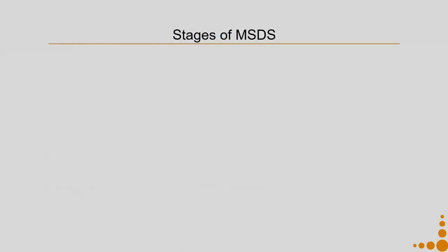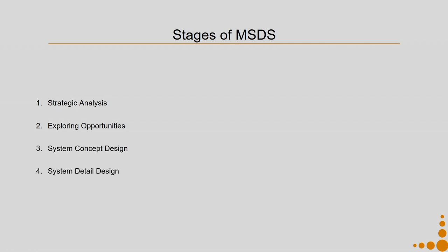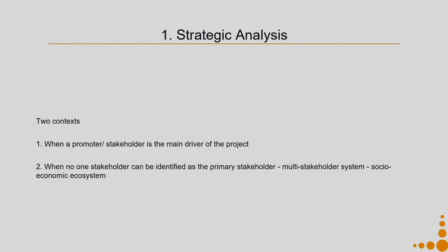What are the stages of MSDS? Stage 1 is strategic analysis. Stage 2 is exploring opportunities. Then we do system concept design, then system detail design, and finally communication. We also studied that in strategic analysis, all the other steps remain the same, but we can have two contexts.